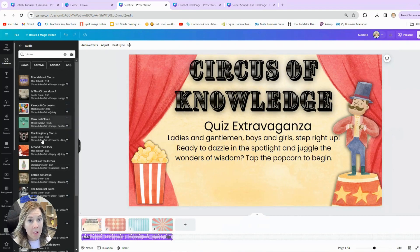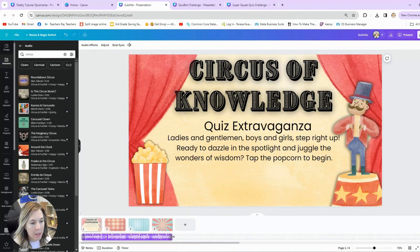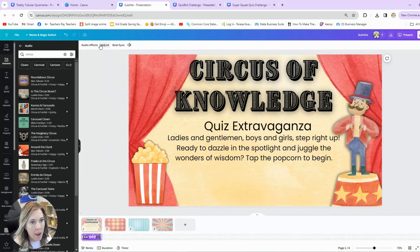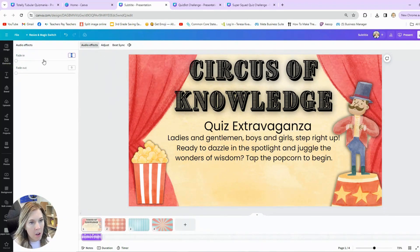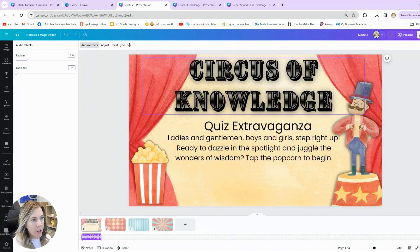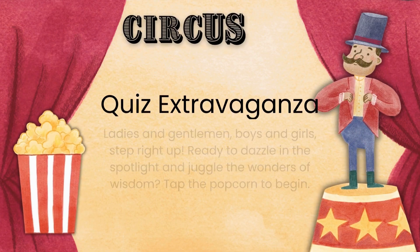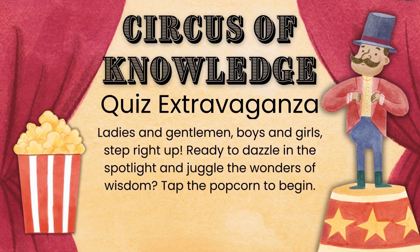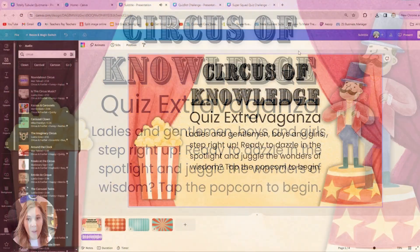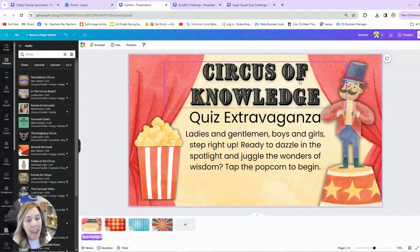I searched 'circus' in audio and found one I liked. I can adjust where I want that sound to play — I only want it on the first slide. I can also adjust auto effects; I like to have it fade in a little bit. Then I can play and see how it looks so far. I think that looks good, so we're going to keep that.